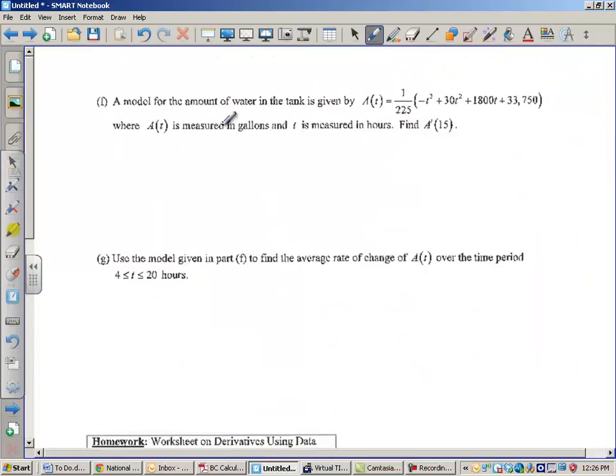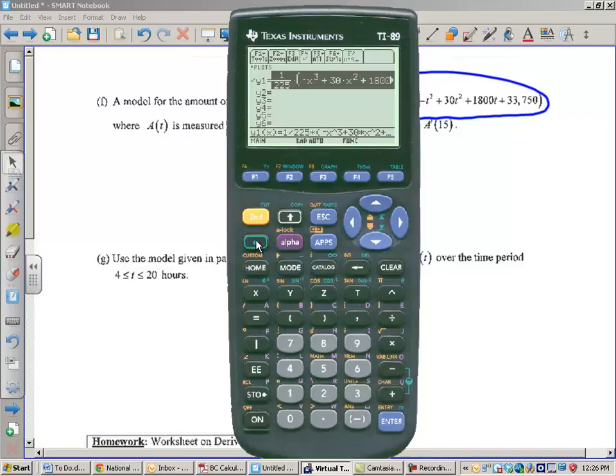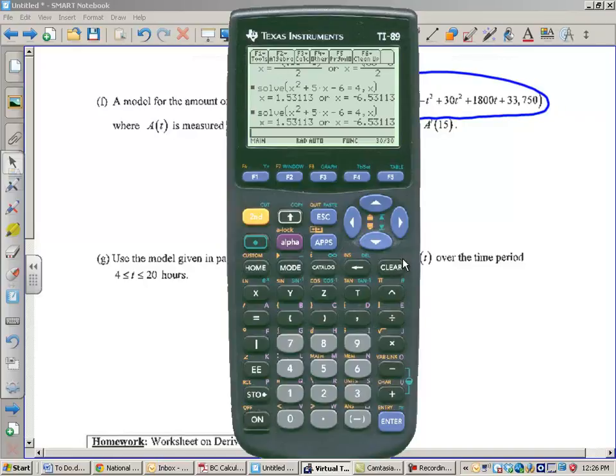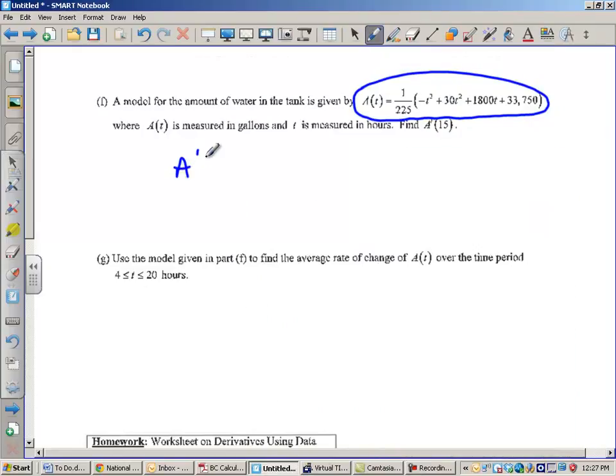I'm going to use a calculator for this next part. A model for the amount of water in the tank is given by this function. So, we're going to use our calculator to find A prime at 15. So, what I'm going to do is I'm going to go to my calculator here, and I have this typed in Y equals, and I'm going to copy this, and I'm going to go to the home screen, and I am going to hit F3. I'm going to go down to differentiate, and I'm going to paste in that function. At the end, I'm going to do comma X. I'm going to close parentheses, and then I'm going to type in evaluated at X equals 15. This will give me the derivative, and it will plug in 15 for me, and that answer is 9. From the calculator, that is 9. So, A prime of 15 is 9. You will need to be able to do that on your calculator.